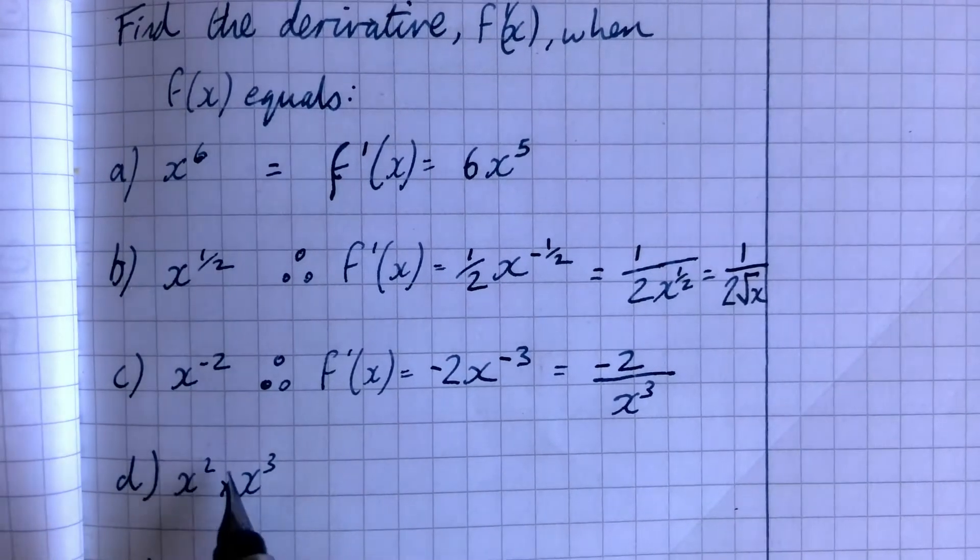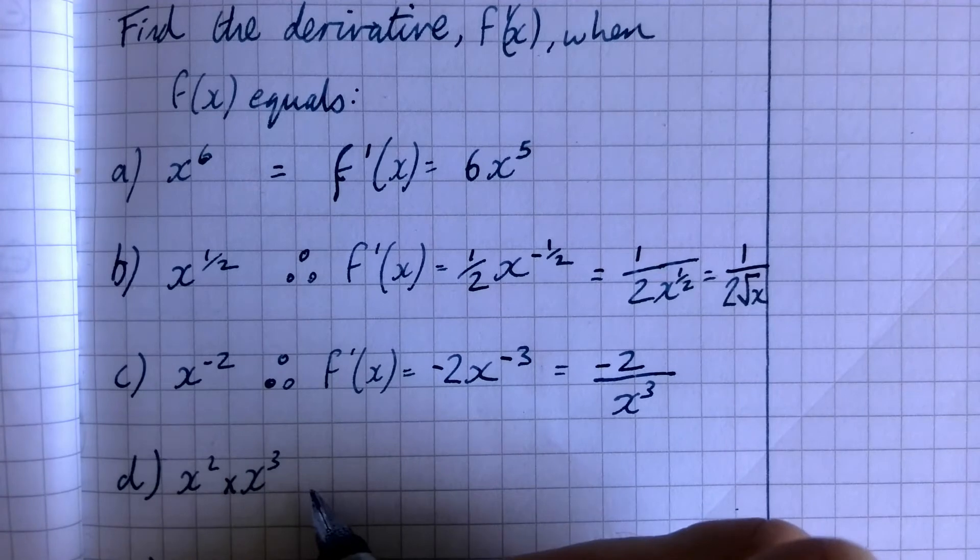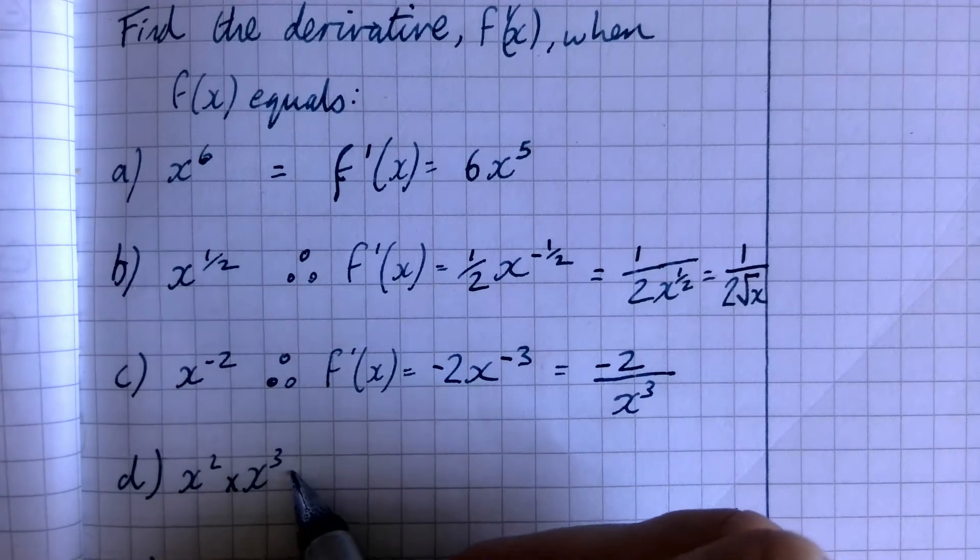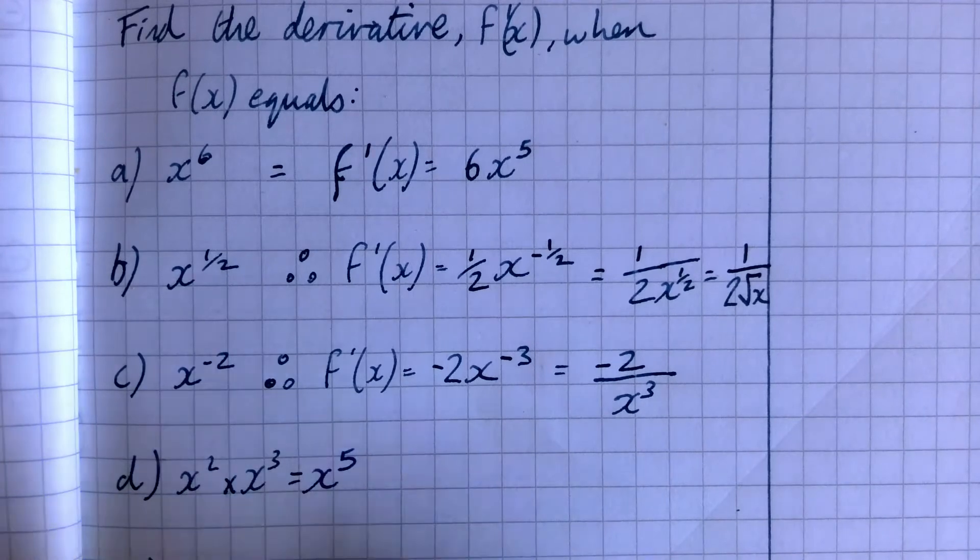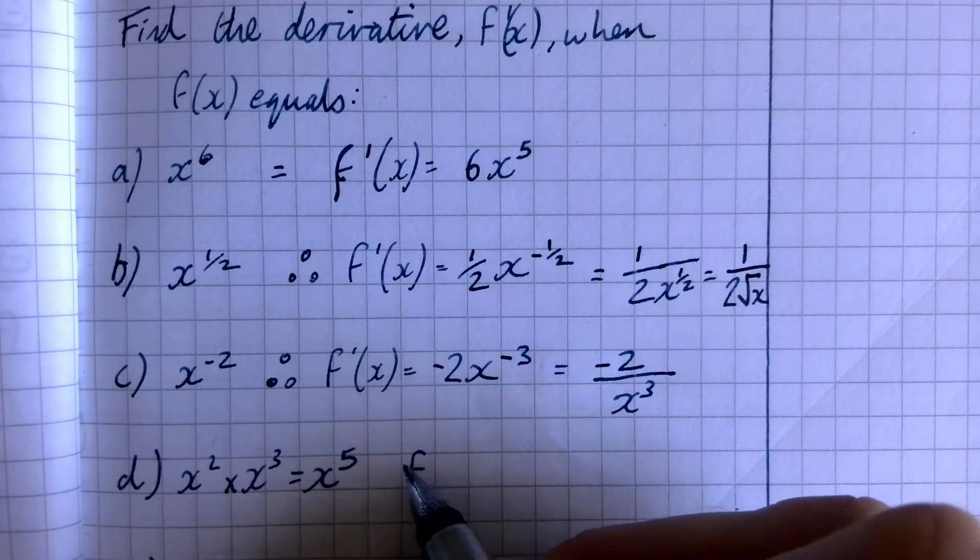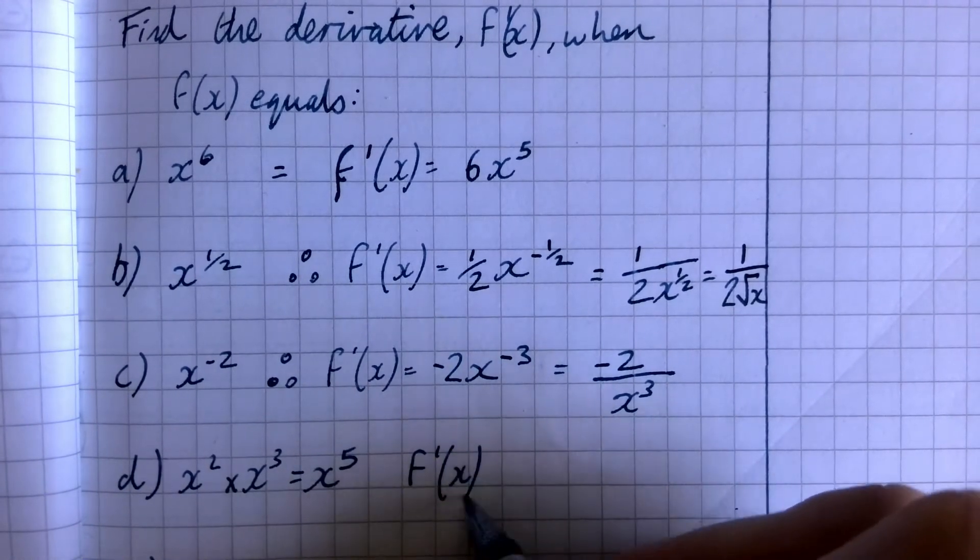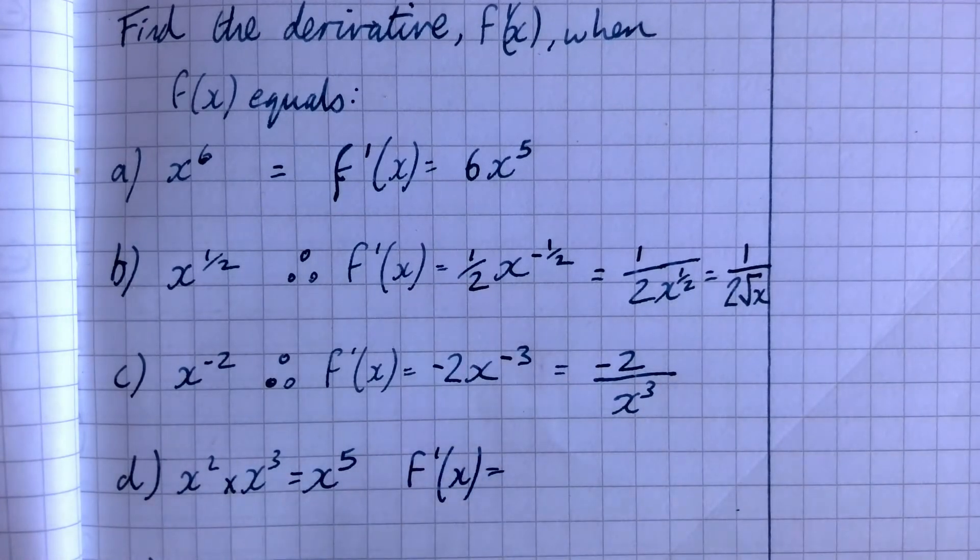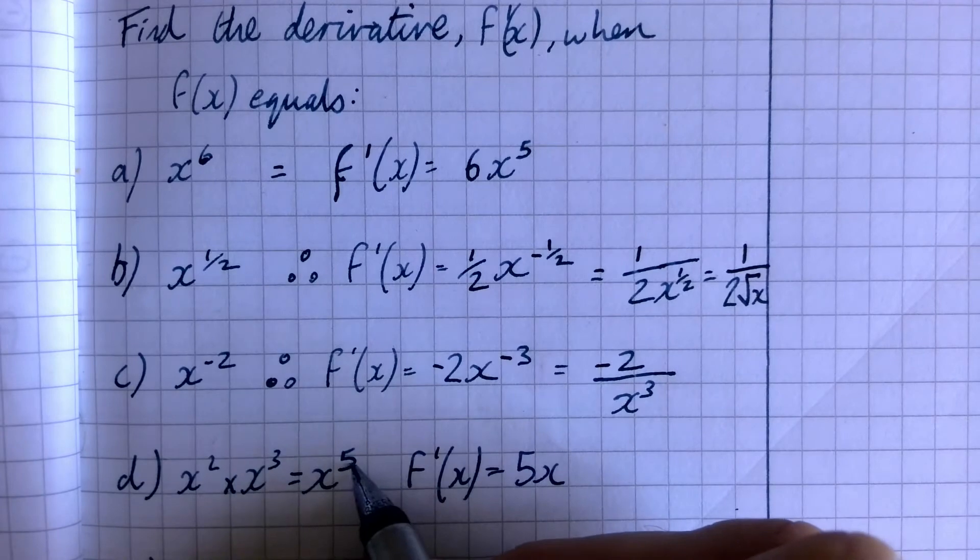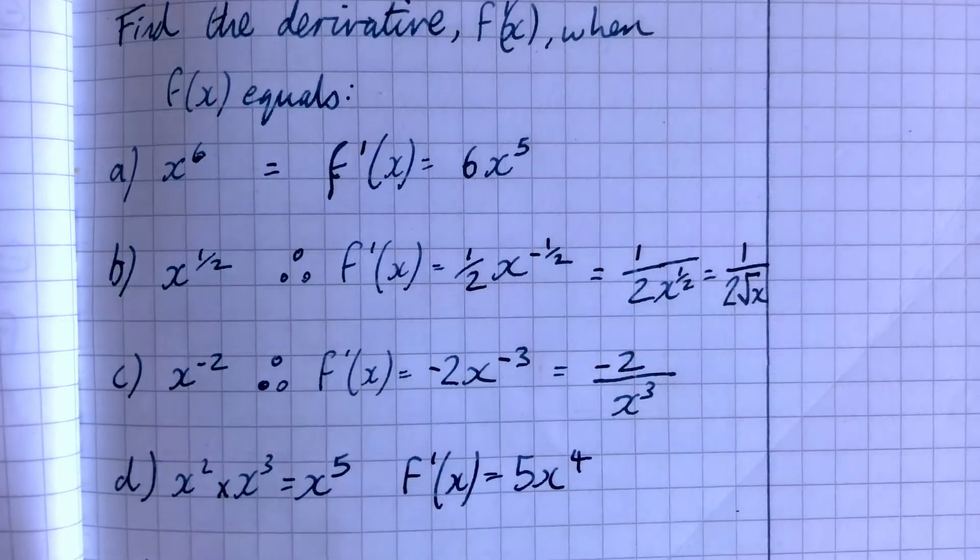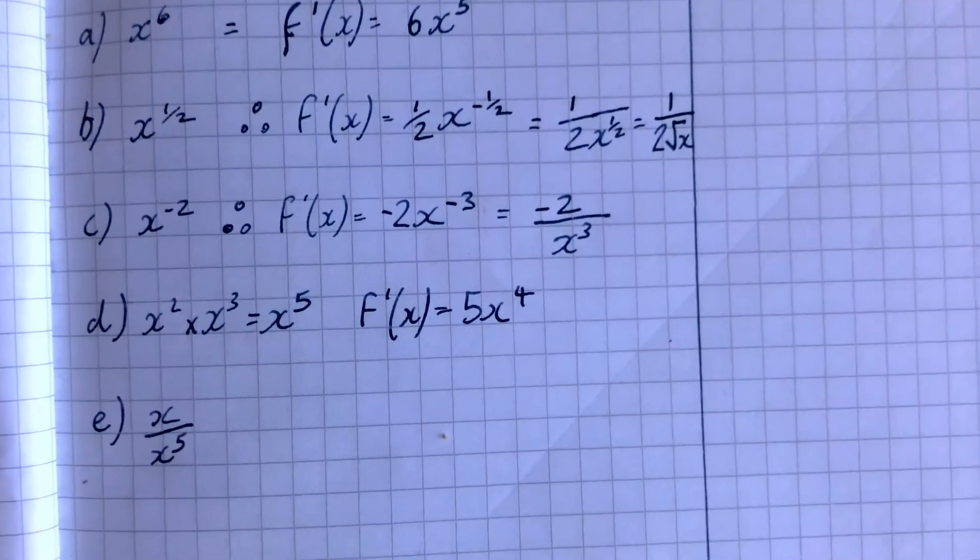On to the fourth one, x squared times x to the power three. Well, first thing we need to do is simplify that. So we've got x to the power five. Then we will have the derivative being multiplied by five, drop the power by one, five x to the power four.